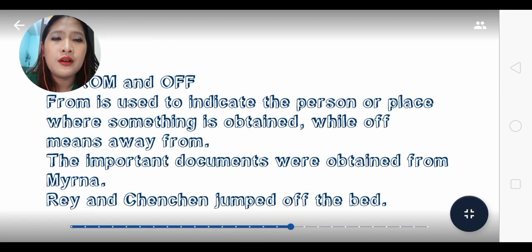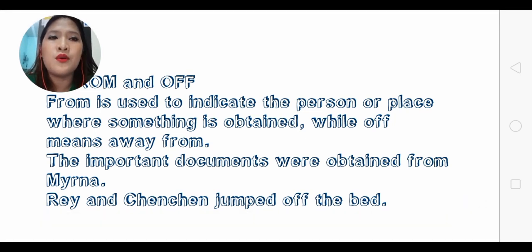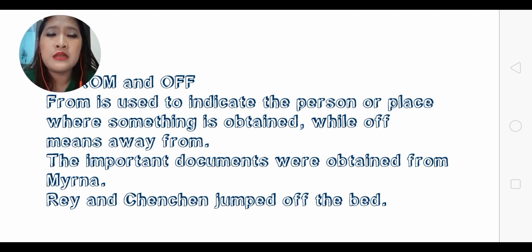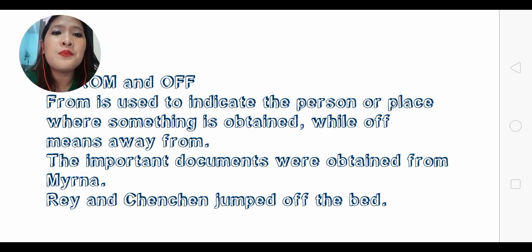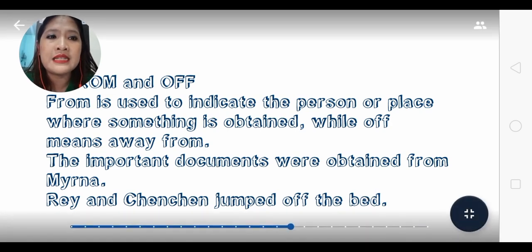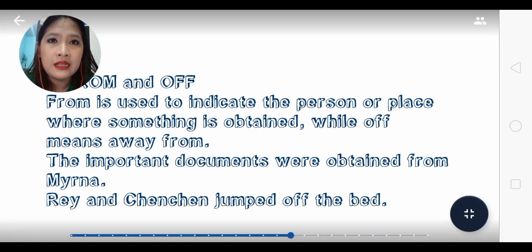Next is 'from' and 'off.' 'From' is used to indicate the source — the place where something is obtained. 'Off' means moving away from something. Example: 'The important documents were obtained from Myrna' — Myrna is the source. 'Ray and Chen jumped off the bed' — they moved away from the bed.